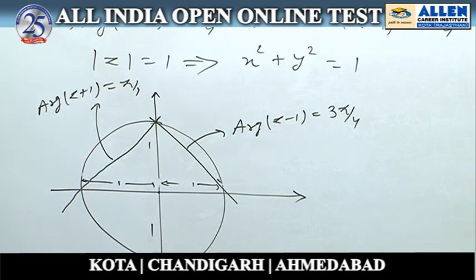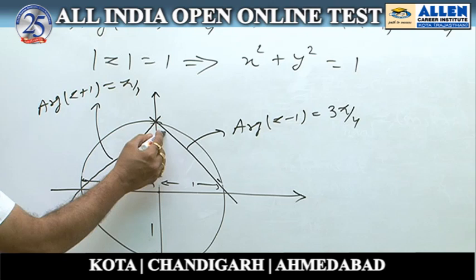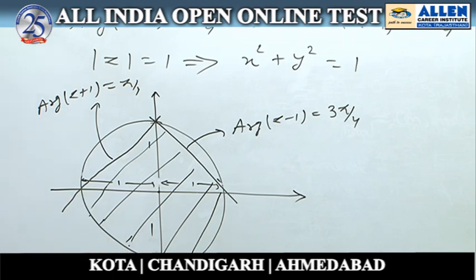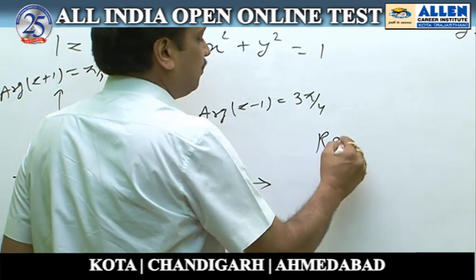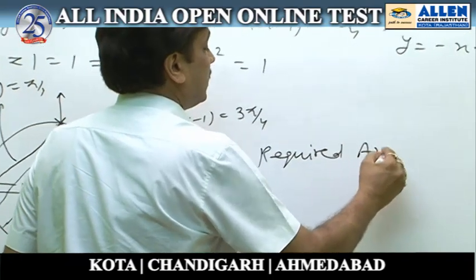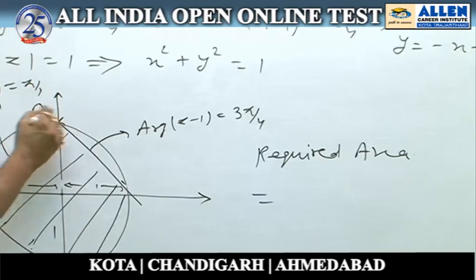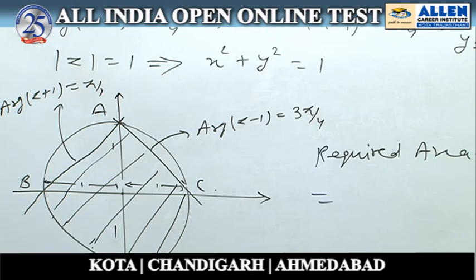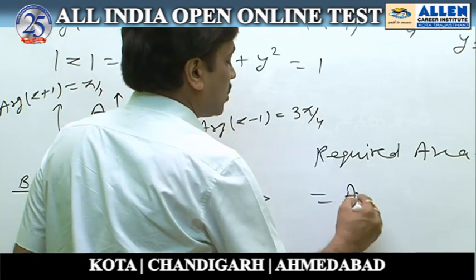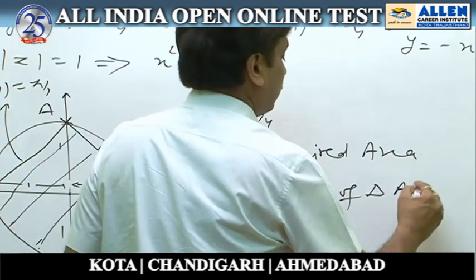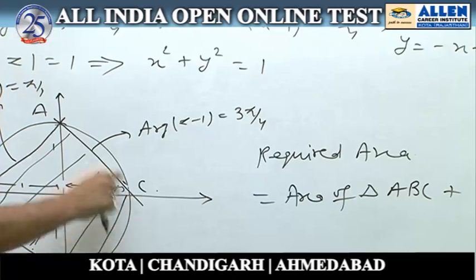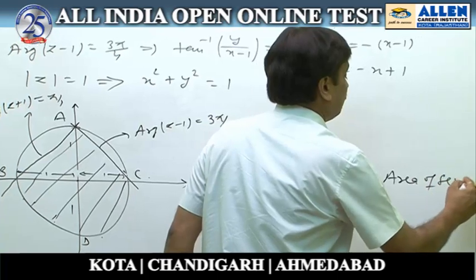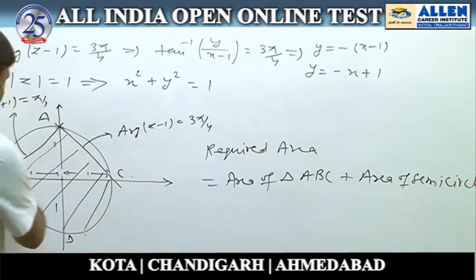It is asked to find the area bounded by these two straight lines and the circle. We label the relevant intersection points as A, B, C, and D. The required area equals the area of triangle ABC plus the area of the semicircle BCD.